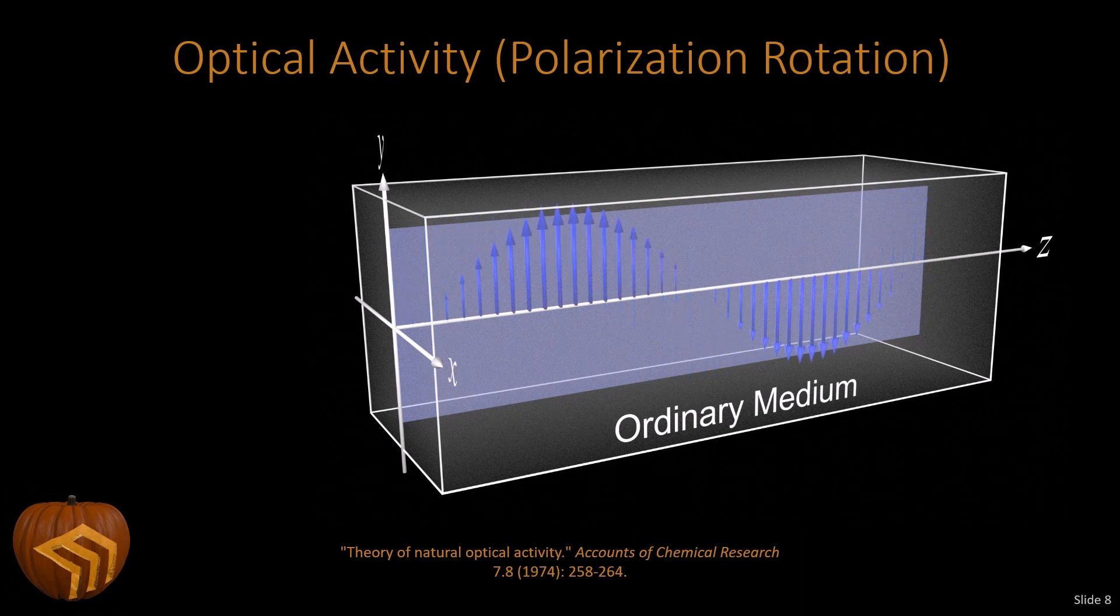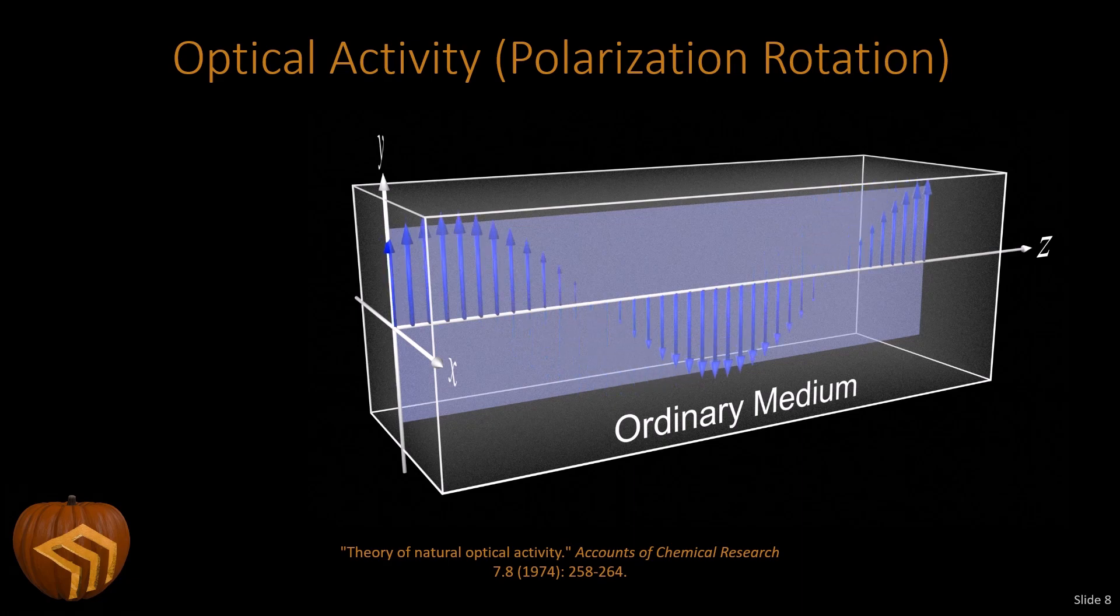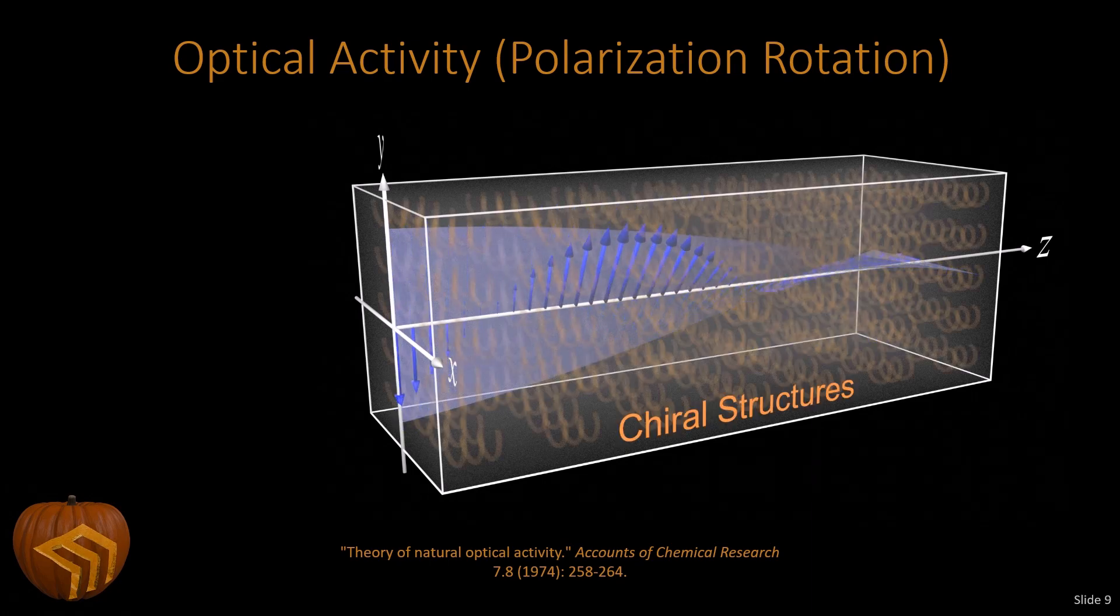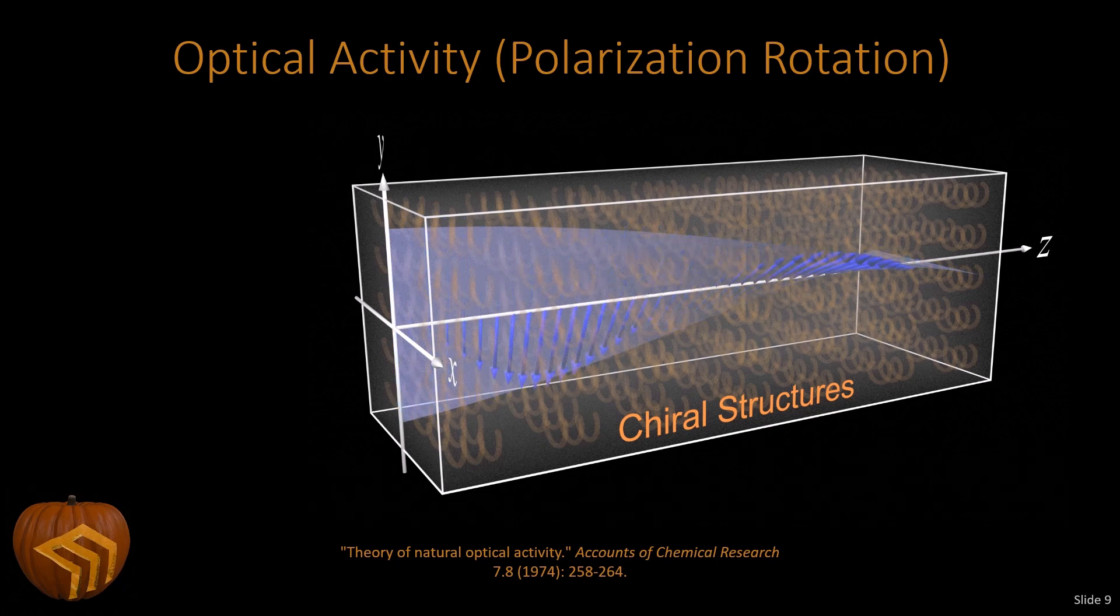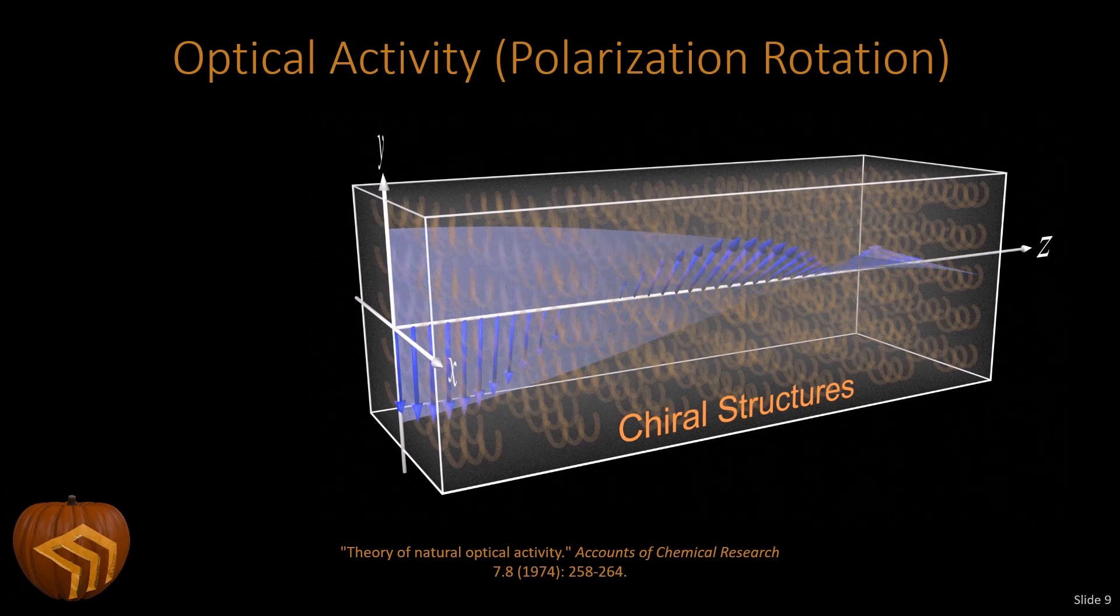And there's lots of applications out there that are used for optical activity. For example, I mentioned the food industry, the food industry uses this to measure the sugar content in things like syrup. The medical industry will use that to measure certain things about drugs. And optical activity is the key principle behind liquid crystal displays. Now for a material to be optically active, it has to have some chiral properties about it. So it needs to be made of something that is spiraling or some sort of corkscrew kind of pattern.